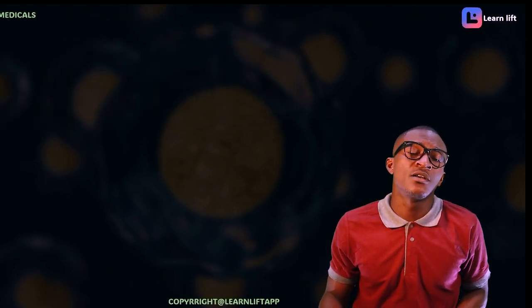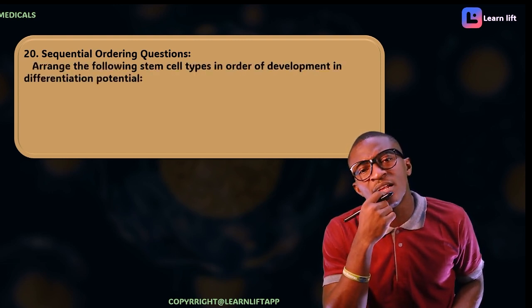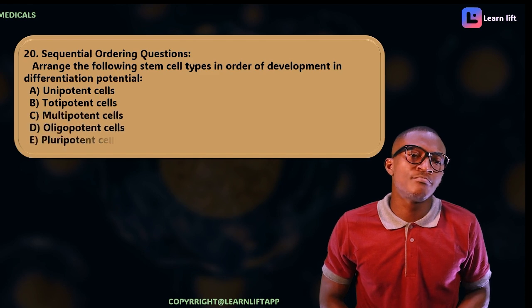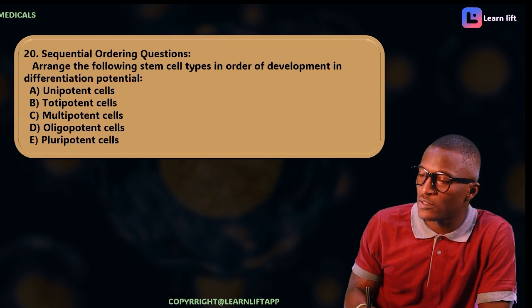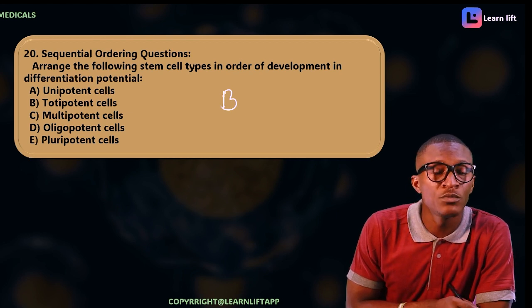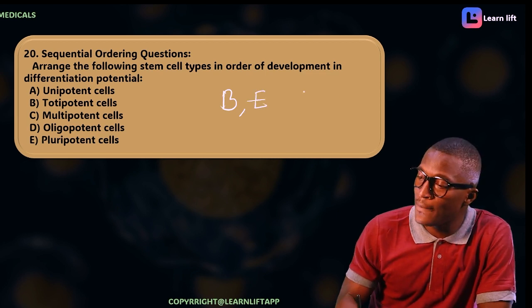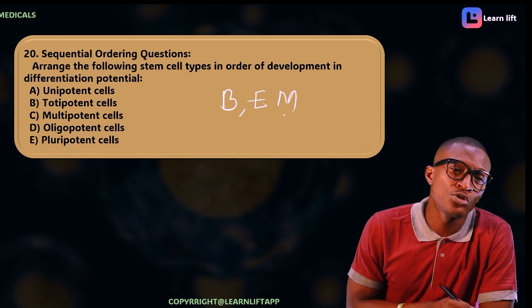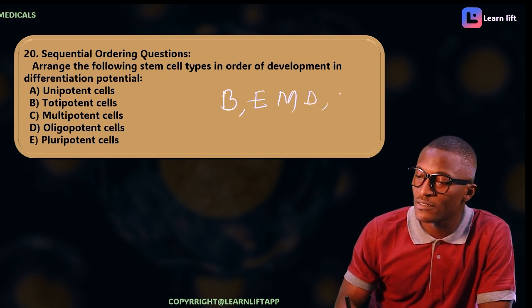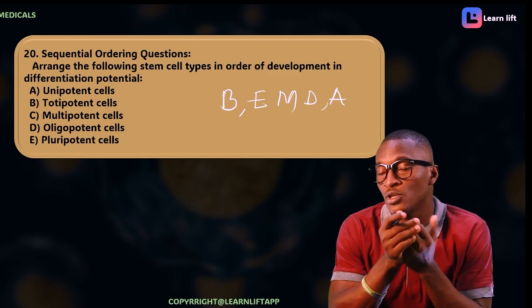The last question is a sequential question: arrange the following stem cells in order of decreasing developmental potential. The first is totipotent, then pluripotent, then multipotent, then oligopotent, and finally unipotent. So the order from highest to lowest potential is: totipotent, pluripotent, multipotent, oligopotent, unipotent.